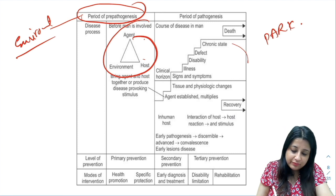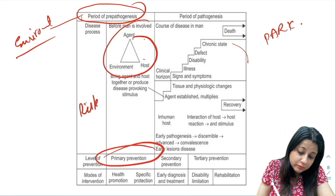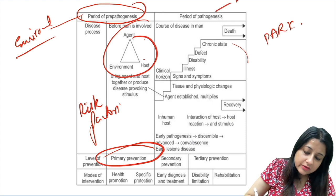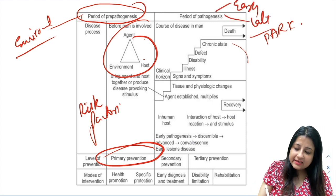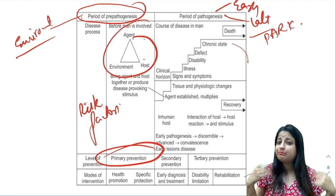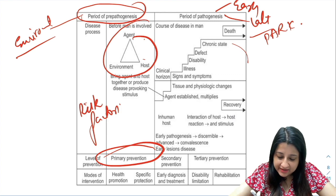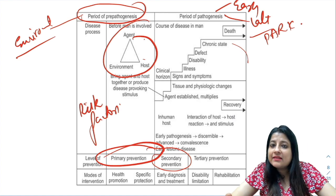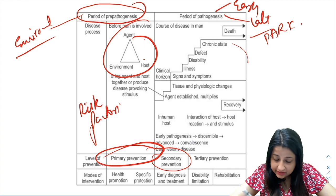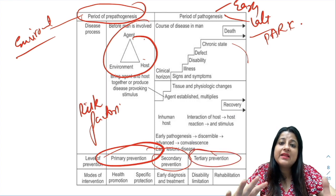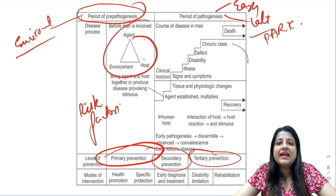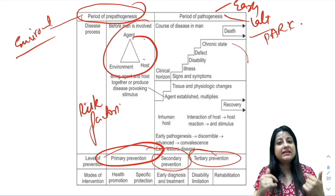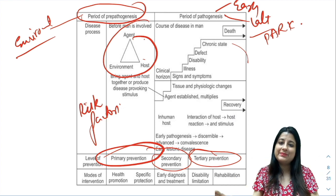The period of pre-pathogenesis is in the environment with equilibrium between agent, environment, and host. The level of prevention here is primary, as we are only exposed to risk factors. Then the period of pathogenesis starts — the agent has entered the body. In early pathogenesis, signs and symptoms are not there, so we apply secondary level of prevention, make an early diagnosis, and provide treatment. In late pathogenesis, signs and symptoms are there — we treat the person, limit disability, and provide rehabilitation. It was not a new topic; it was the same topic asked in a different manner.